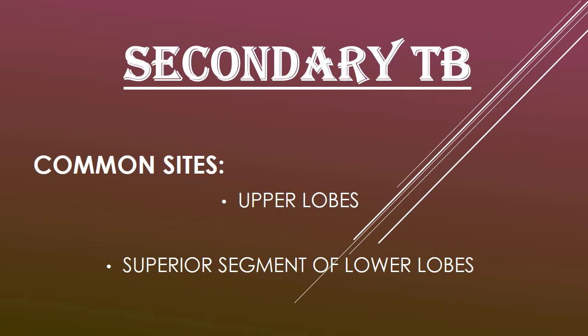Secondary TB or post-primary TB develops in a previously sensitized host, resulting from reinfection or, most commonly, reactivation of a primary infection. It may occur shortly after primary TB, but mostly develops after the initial infection. It is almost always localized — one or both upper lobes are involved, and the superior segments of lower lobes are frequently involved. In these locations, a high oxygen concentration favors mycobacterial growth.